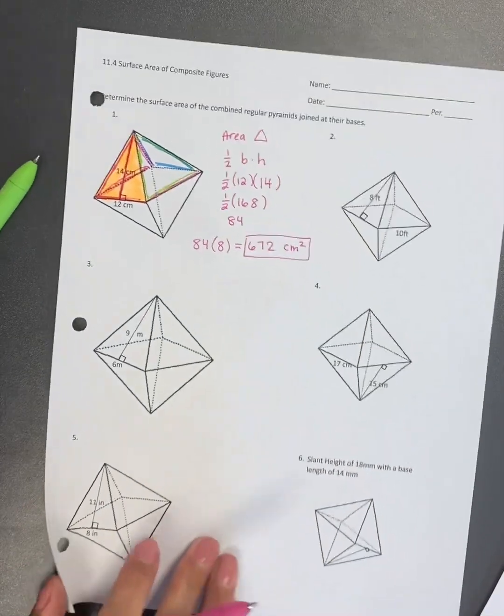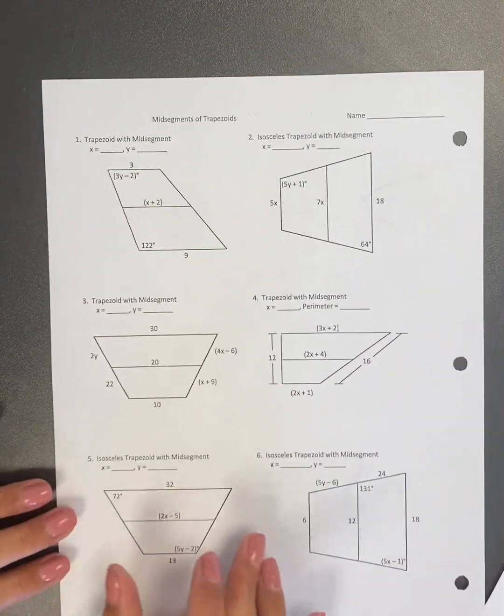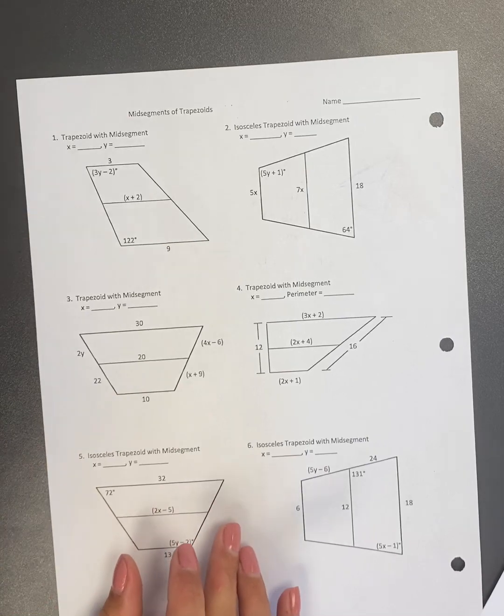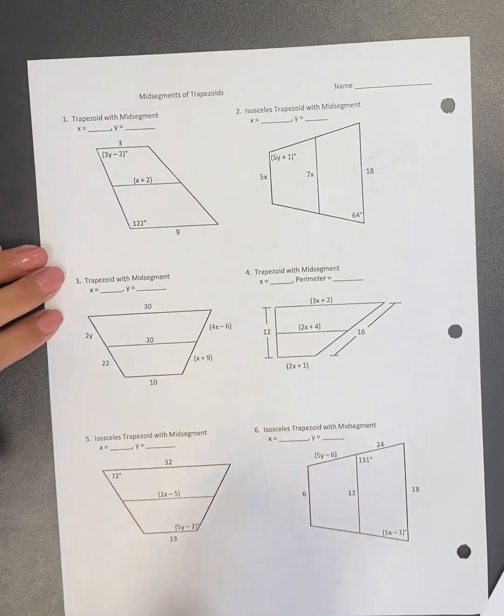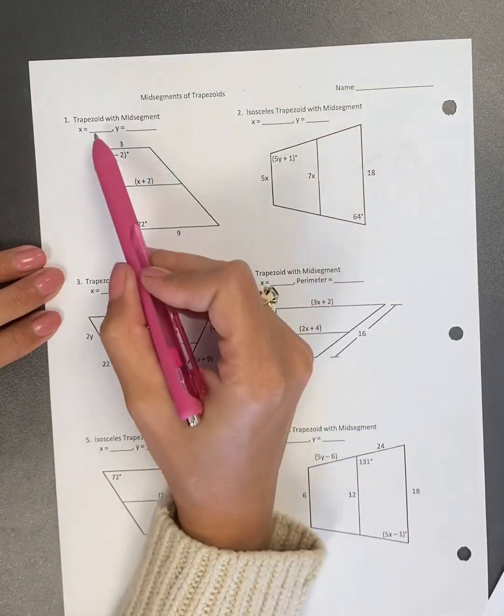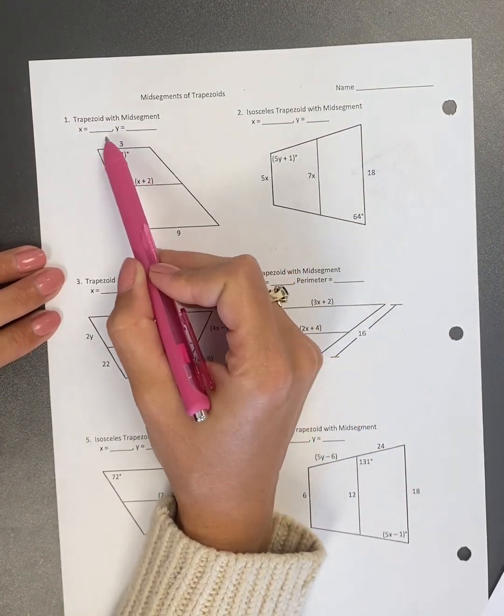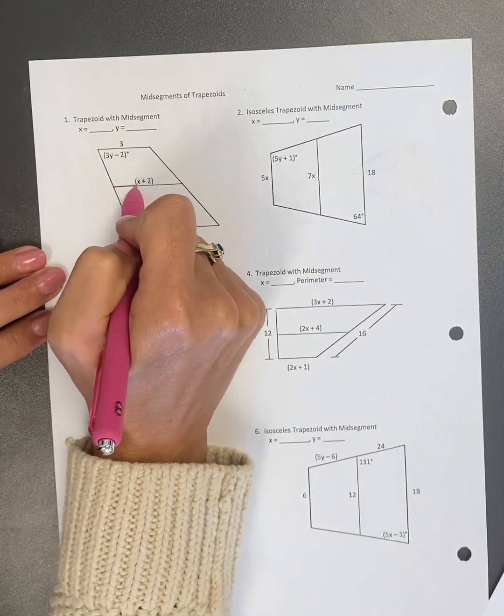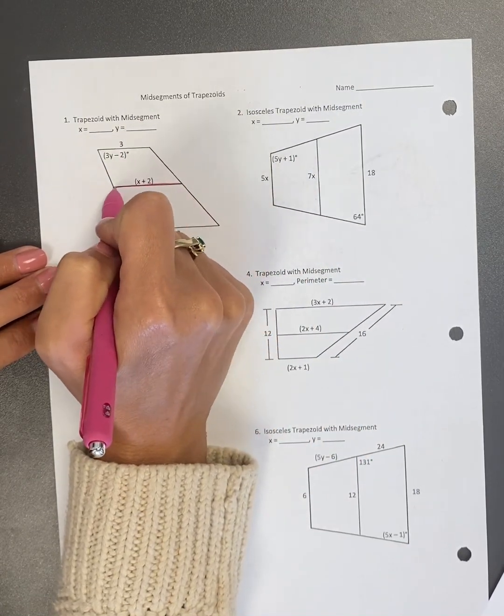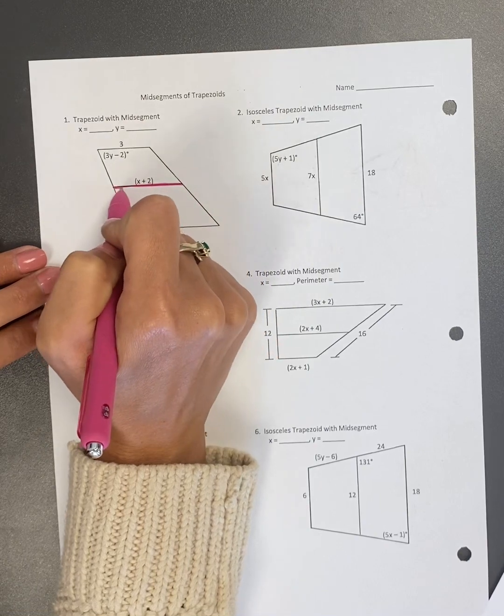Now let's go to the back. The back is a review of midsegments of trapezoids. So we're going to do number one together and I'll help you set up number three. So for number one, for a trapezoid with a midsegment, there are two problems in each problem. So one of which is finding X. And if you look where X is, X is on the midsegment itself.